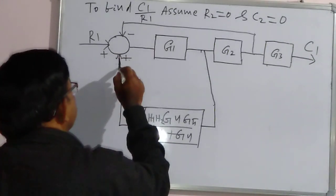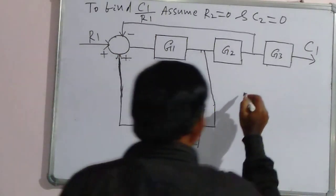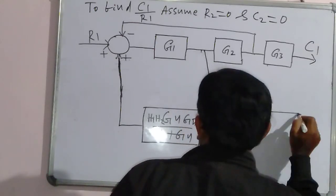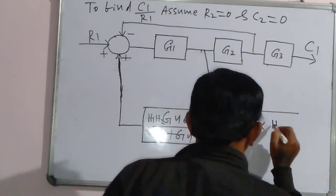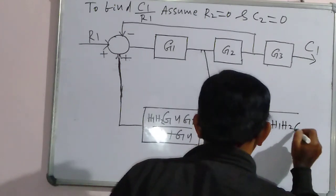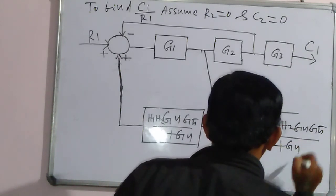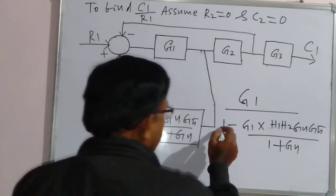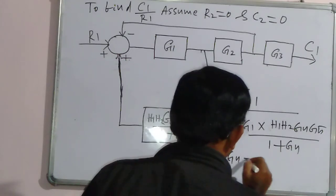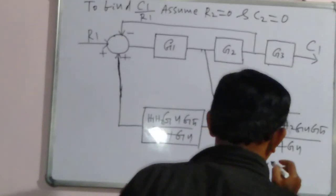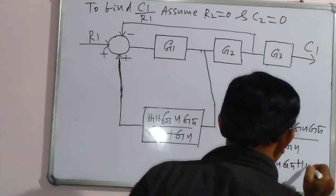This is the feedback loop with positive feedback. Now we can take the transfer function: G1 divided by 1 minus G1 multiplied by H1·H2·G4·G5 divided by 1 plus G4.